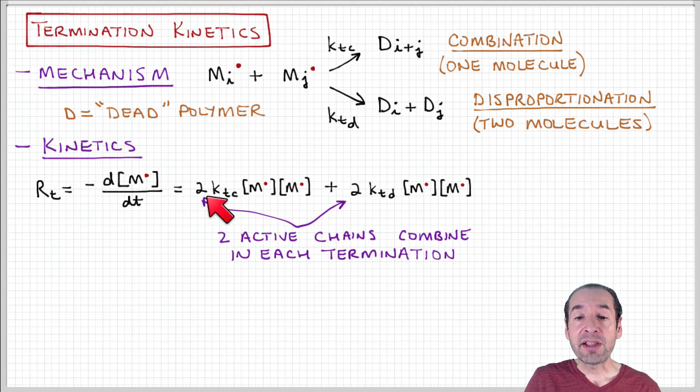For combination, we have two active chains that combine with some rate constant, and that is proportional to the product of these concentrations of active chains I and J, and similarly for the disproportionation step.